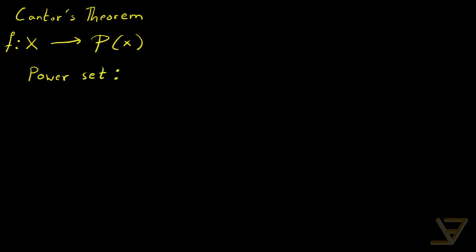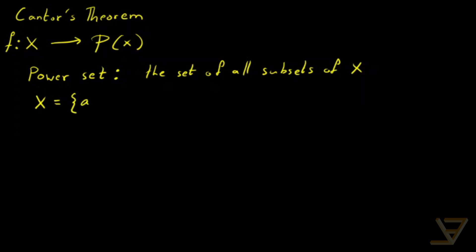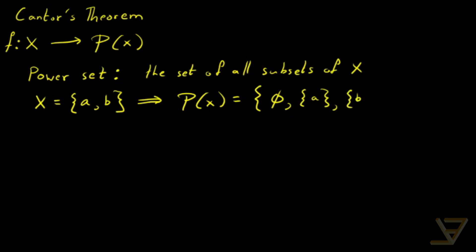The power set is the set of all subsets of x. Let me give you an example. Let's say x is equal to the set with two elements, a and b. Then the power set of x is equal to the set that contains the empty set, because that's the subset that contains nothing at all, the set that contains a, the set that contains b, and the set that contains both a and b, which was the original set x. Notice that the empty set is considered to be a subset, and the set itself is also considered to be a subset.